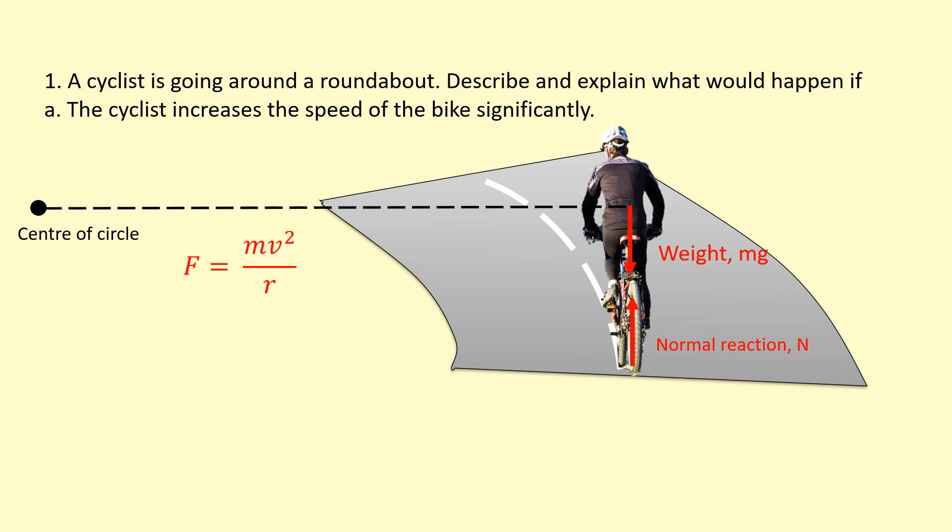We need something to provide that. So what's going to be the F in this mv squared over r? It's actually going to come from the friction between the tire and the road, which is going to point towards the left here. So that is the centripetal force. If we increase the speed, what's going to happen? If we get faster, the frictional force is going to get bigger.